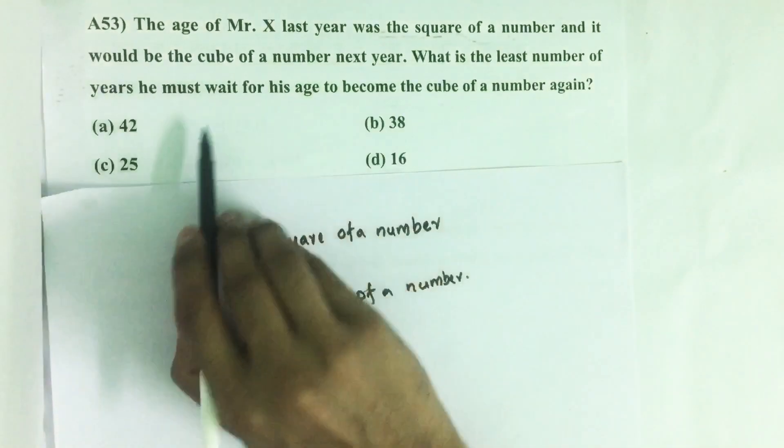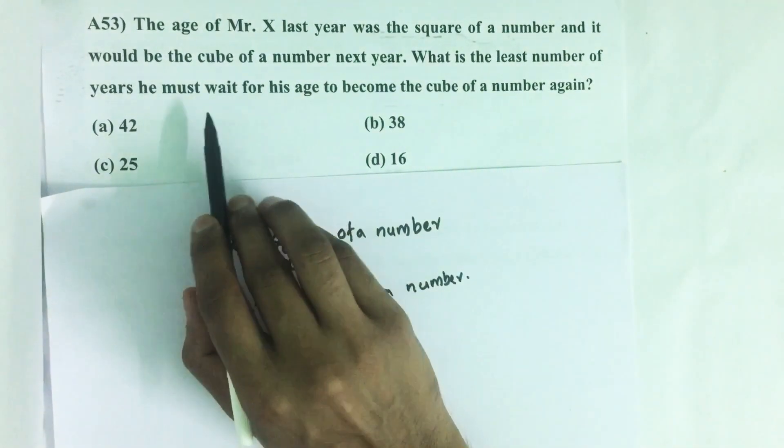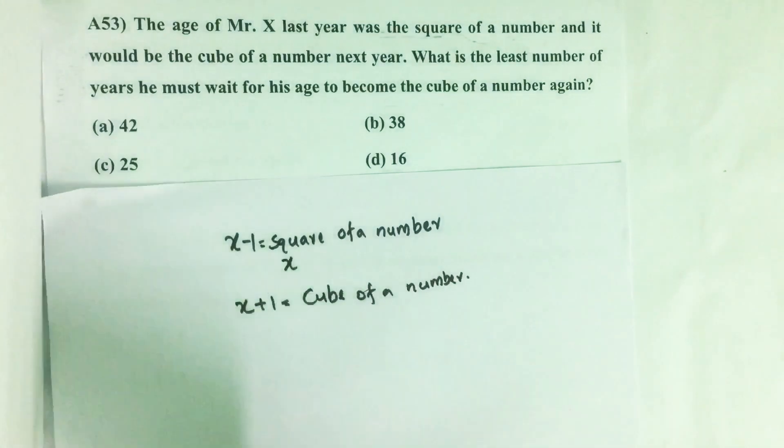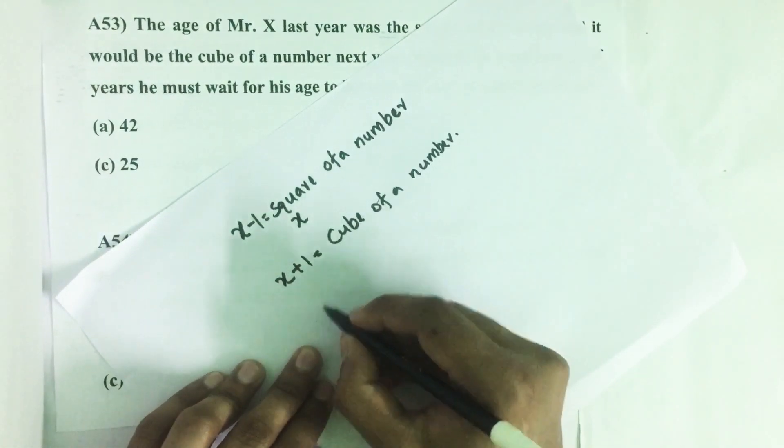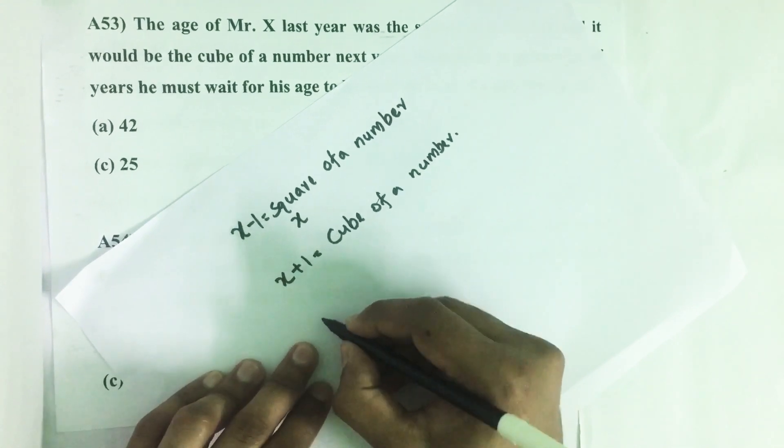What is the least number of years he must wait for his age to become the cube of a number again? For that, let's see the squares of numbers.